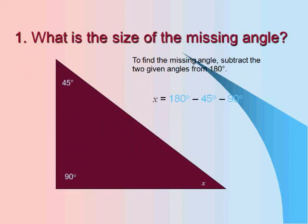Now for a little short quiz. What is the size of the missing angle? Well, to find the missing angle, subtract the two given angles from 180 degrees. So for this triangle, all three angles will add up together to equal 180. So if you already know that one angle is 45 degrees and another angle is 90 degrees, the missing angle X will be 180 minus 45 minus 90, which leaves you with X equals 45 degrees.